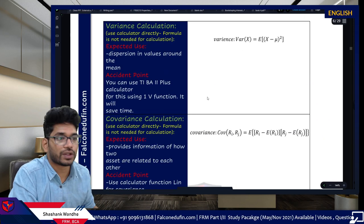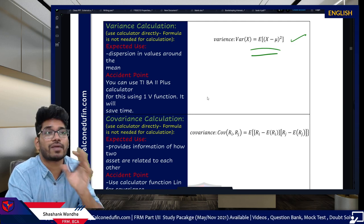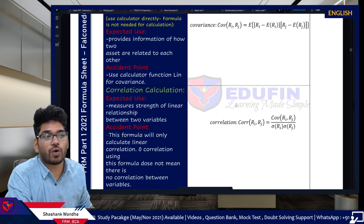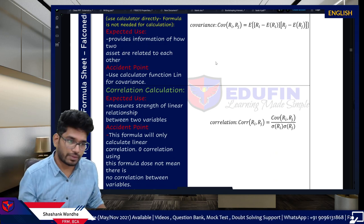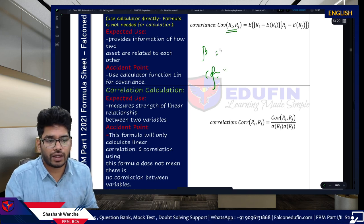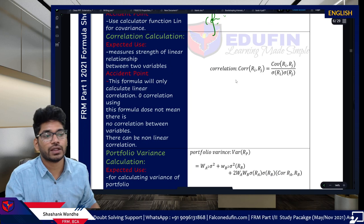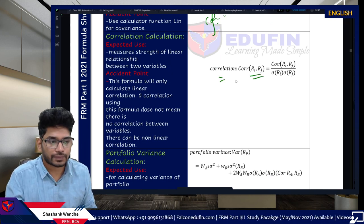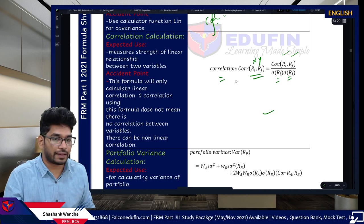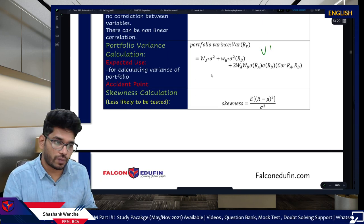For variance, use your calculator if GARP provides the data — watch the free calculator course on the website. Note: the calculator provides standard deviation, not variance; if GARP asks for variance, square it. Covariance is generally not directly tested — GARP will provide it in ready-made format for use in beta or correlation calculations. The correlation coefficient: covariance of (ri, rj) divided by sigma(ri) × sigma(rj).